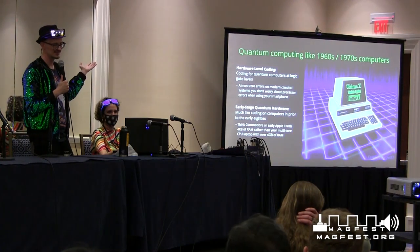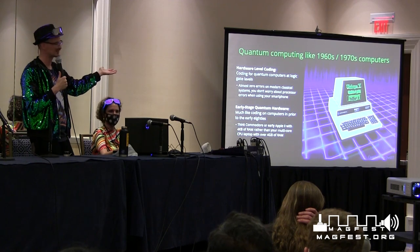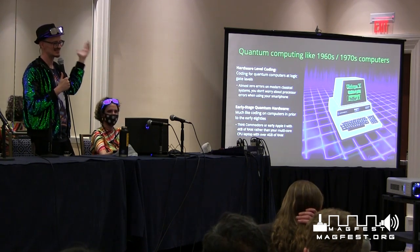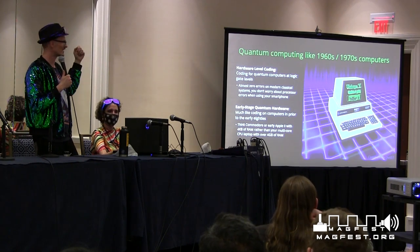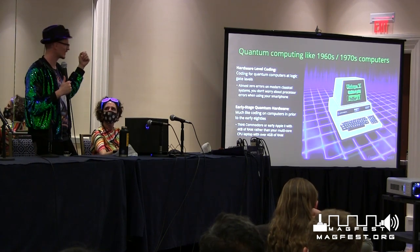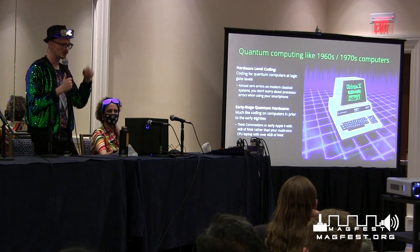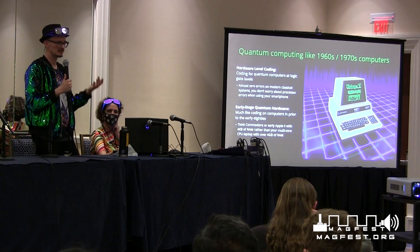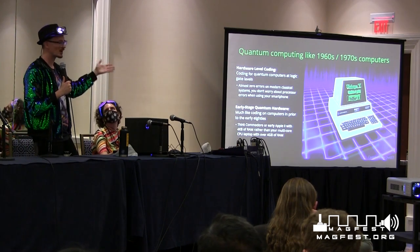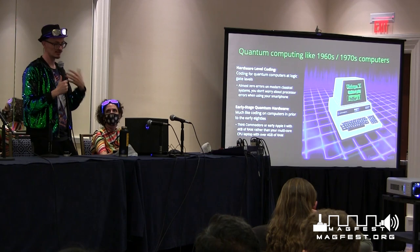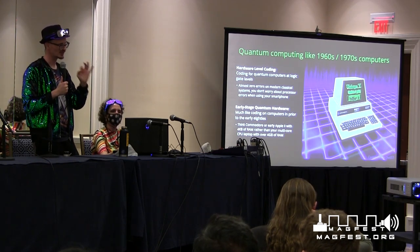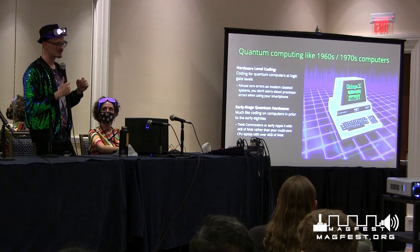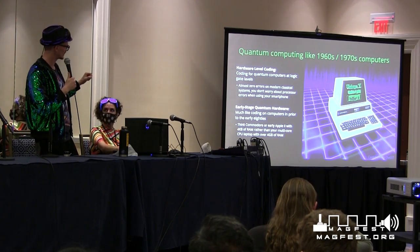Quantum computers are like a 1960s or 70s computer — like the Commodore PET from 1977. That thing is terrible. When you think about your phone or home computer, you don't worry about it giving errors. With a quantum computer, you've got to worry about errors, which makes it very hard to design games or run things effectively — but it's also something you can use cleverly if you're really creative.